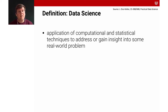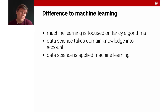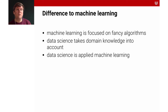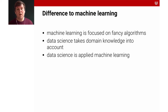Let's formally define data science. For the purposes of this lecture, I consider data science as the application of computational and statistical techniques to address or gain insight into some real-world problem. Machine learning is focused on advancing algorithms, whereas in data science we apply them to answer certain questions — data science is more or less applied machine learning that takes domain knowledge into account to answer real-world questions.